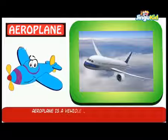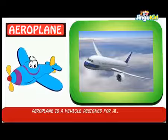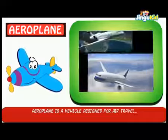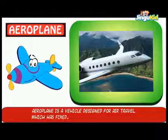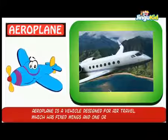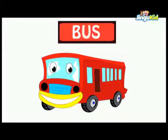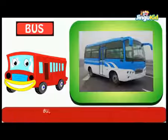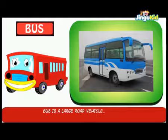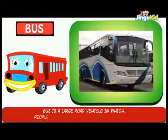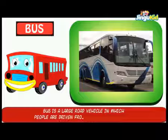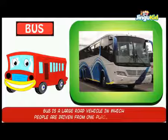Aeroplane. An aeroplane is a vehicle designed for air travel which has fixed wings and one or more engines. Bus. A bus is a large road vehicle in which people are driven from one place to another.